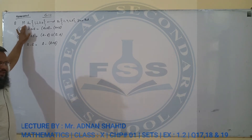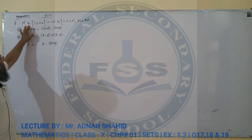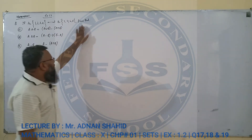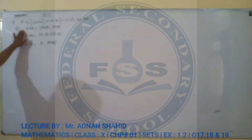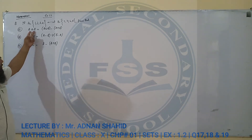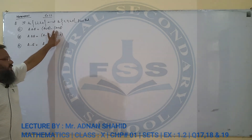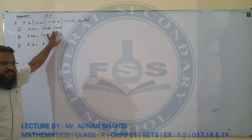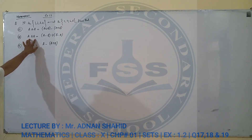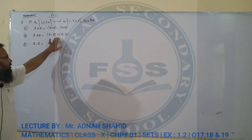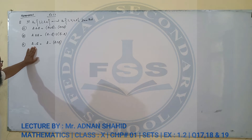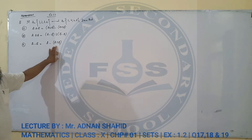Question number 17, 18 and 19. सवाल में कहता है कि if set A के members हैं 1, 2, 3, 4 और set B के members हैं 2, 4, 6, 8. कहता है कि साबित करें कि A का symmetric difference B के साथ बराबर है A union B minus A intersection B. Question number 18 में कहता है कि A का symmetric difference B के साथ बराबर है A minus B union B minus A. तीसरे सवाल में कहता है कि साबित करें कि A minus B बराबर है A minus A intersection B के।